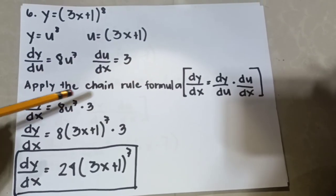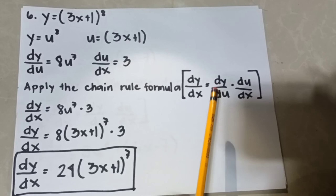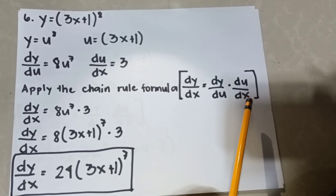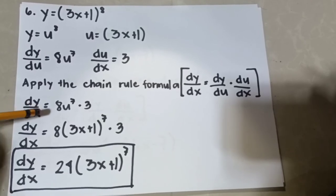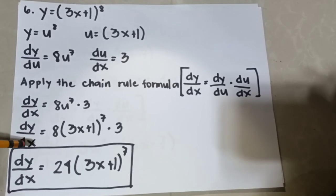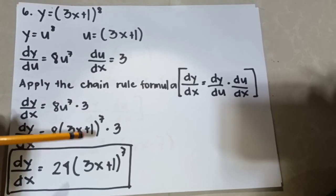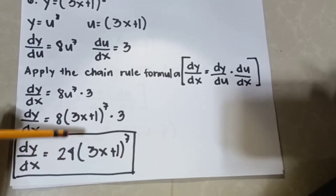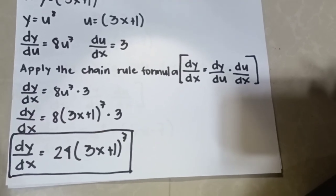Step 2, apply the chain rule formula: dy/dx equals dy/du times du/dx. Substituting the values: dy/dx = 8u⁷ × 3. Substituting u = 3x + 1: dy/dx = 8(3x + 1)⁷ × 3 = 24(3x + 1)⁷. This is our final answer, the derivative of y with respect to x.